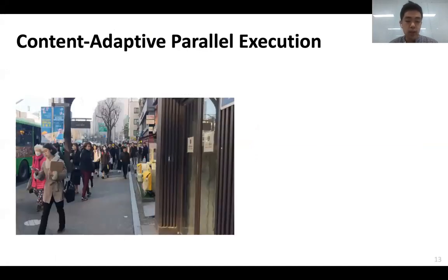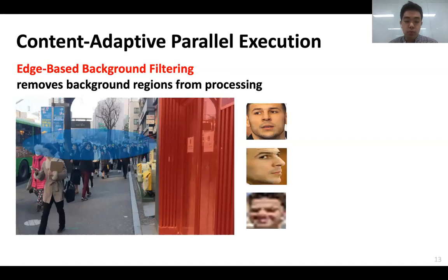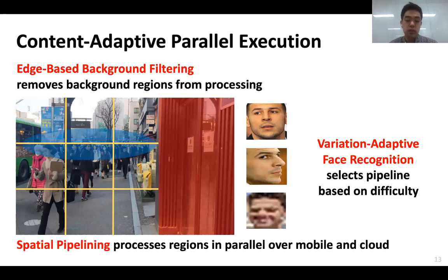Given an input scene, many regions contain no faces at all. Edge-based background filtering removes such background regions to avoid wasted computation. Second, for the remaining regions, detected faces have various recognition difficulties based on how they are captured. Variation Adaptive Face Recognition adaptively selects the recognition pipeline for each detected face based on its recognition difficulty. Finally, identifying faces in different regions of the scene is spatially independent. Spatial pipelining processes these regions in parallel over mobile and cloud. I will focus on explaining the latter two techniques in detail.